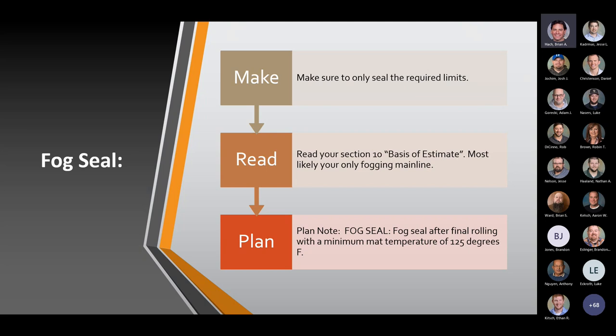When you're going to fog seal, make sure you only seal the required limits. Read your section 10 basis of estimates — most likely only fog the main line. Something I always like to see is the plan note: 'fog seal after final rolling with a minimum mat temperature of 125 degrees.' The reason I like it is it allows me to get out and mark core locations before it gets too late in the day, versus having the contractor pave to sundown and then fog everything, leaving you trying to mark cores in the dark.